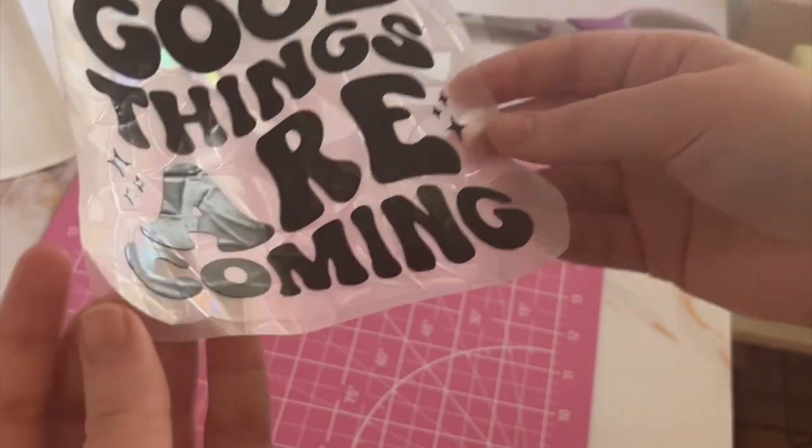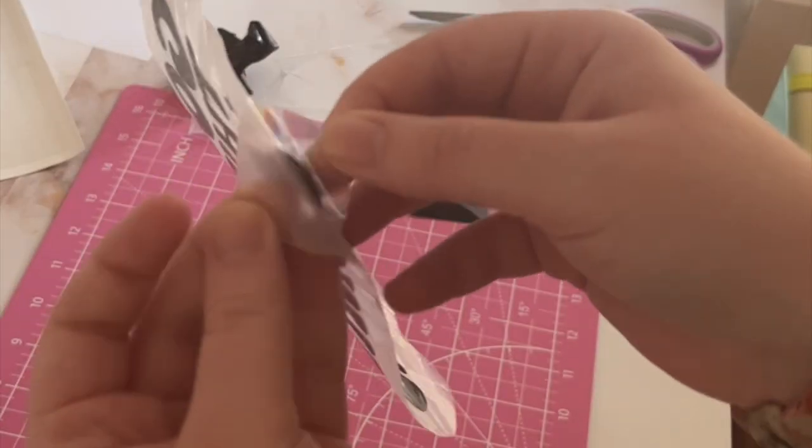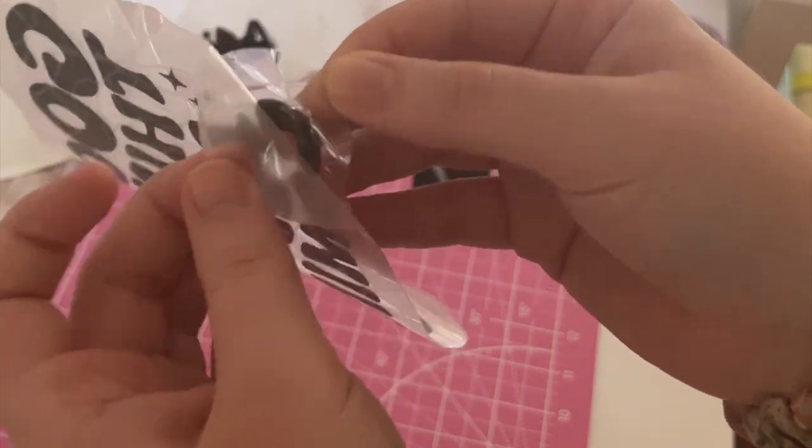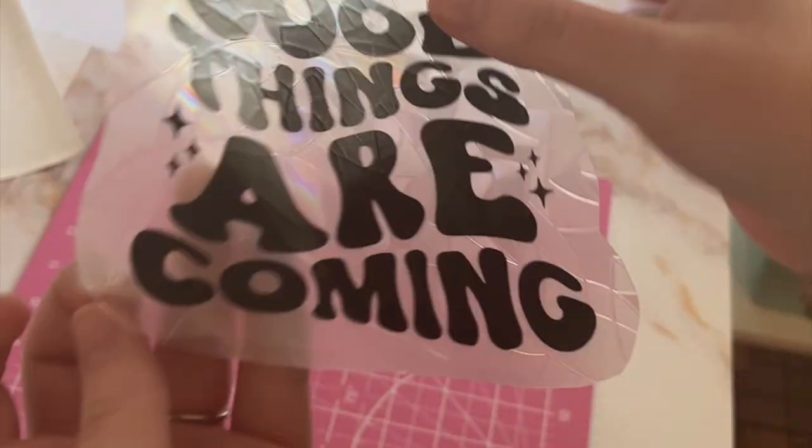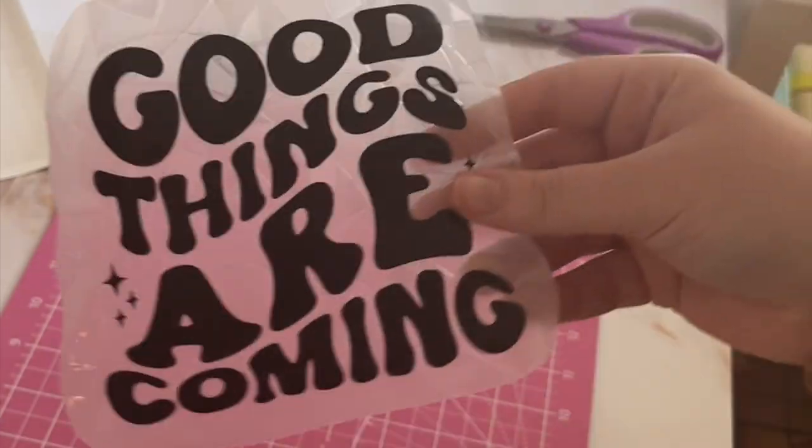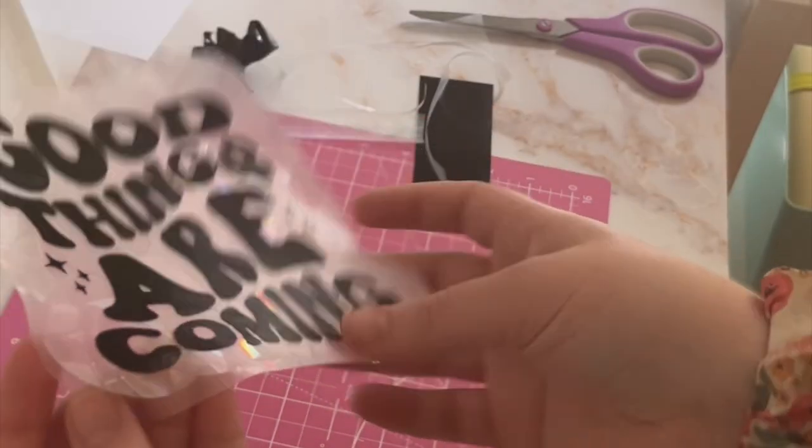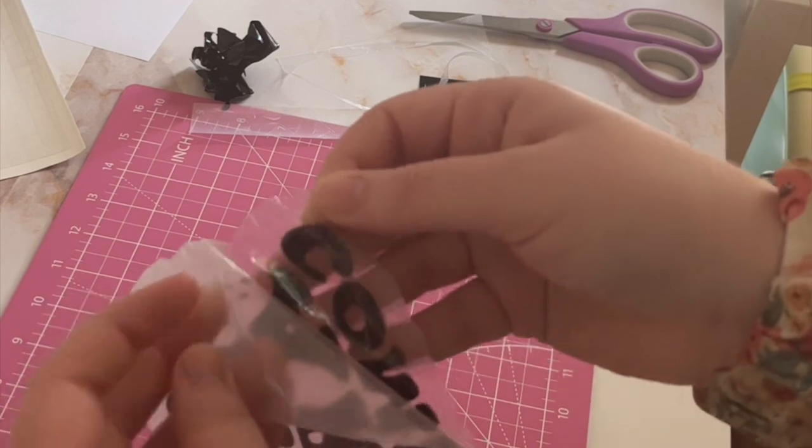So because I just cut around it I can easily peel the backer off of this and it's gonna just go right around it. I wanted to do this so that I could clean the window and I wasn't quite ready to take that backer off yet.